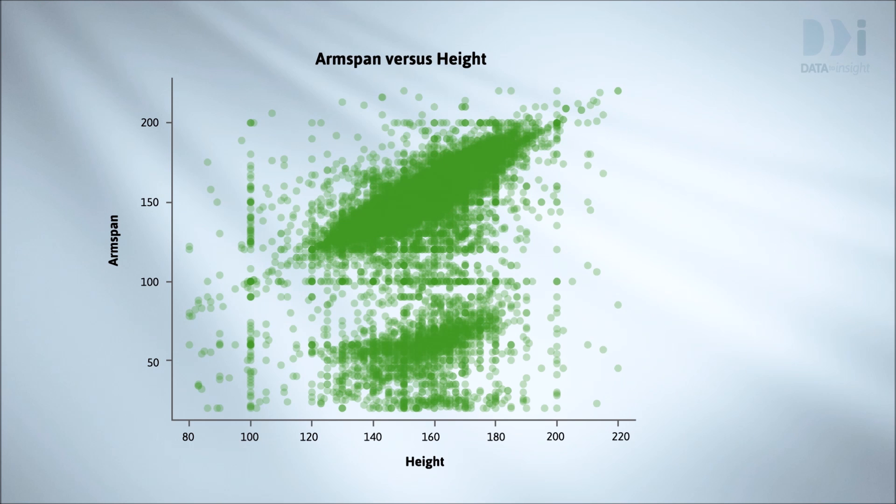And then there are the stripes. Can you see a vertical stripe and a horizontal stripe at 100 centimetres? Those are the children who rounded their values to one metre. At a certain age, getting to be one metre tall is a big deal, which might explain some of this. And then there are a lot of other more subtle rounding stripes as well. Especially at the tens: 120, 130, 140, 160, and so on.